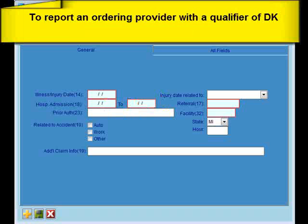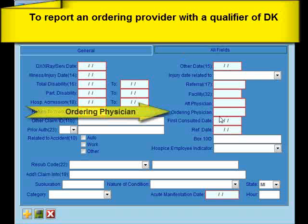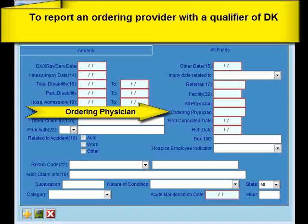To populate Item 17 with a DK Qualifier for an Ordering Provider, click the All Fields tab. Then enter the doctor code for the Ordering Provider in the Ordering Physician field and save your changes. Typically when reporting a DK Qualifier on a claim, you are billing out Durable Medical Equipment or DME. If you're doing that, make sure your procedure code is flagged as a DME procedure code by going into the procedure codes and checking the box to indicate it is DME.